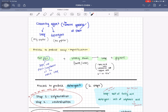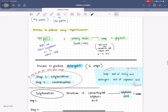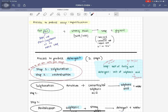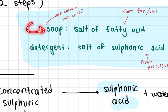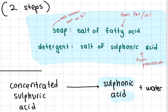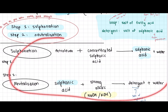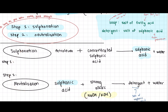Moving on to the next cleaning agent: detergent. What's the process to produce detergent? To produce soap the process is saponification. Whereas to produce detergent, there are two steps: step one is sulfonation, and step two is neutralization. Sulfonation comes from the word sulfonic acid. Detergent is salt of sulfonic acid, and sulfonic acid is from petroleum.